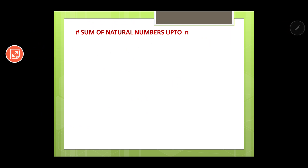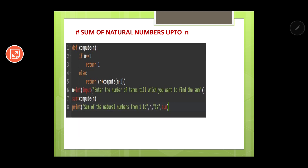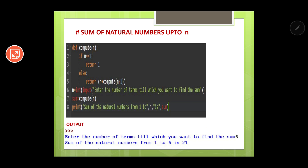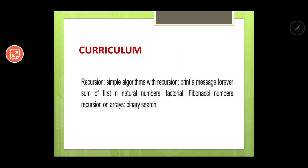We were discussing the sum of natural numbers up to n. In the output, entering n=6 gives 21, confirming the result. Lines 2 and 3 are the base case, helping the program stop, while line 5 is the recursive case, calling the function 'compute' again and again. That covers all the topics for Part 1 of this chapter. In Part 2, I will deal with the remaining topics. Thank you very much — I hope this session was useful.